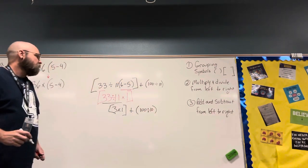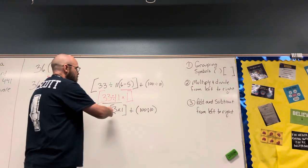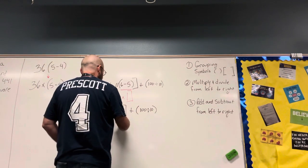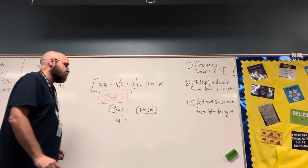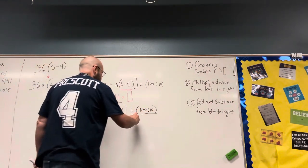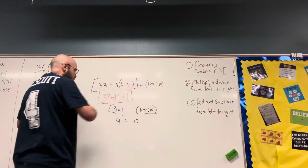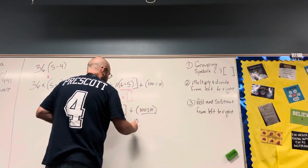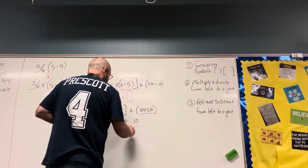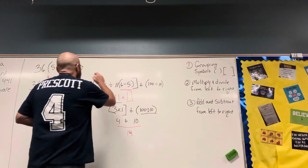Now I have, still inside my brackets here, I got 4 plus inside my parentheses here, 100 divided by 10. That's 10. I've done everything else. We should be down to our last step, which is 14.